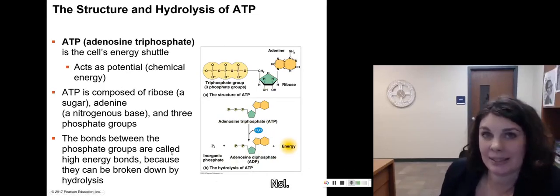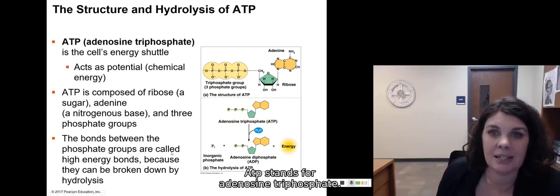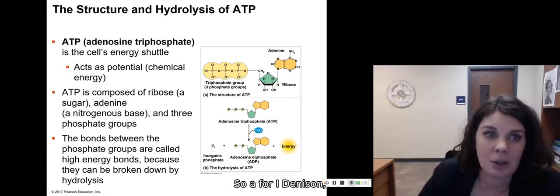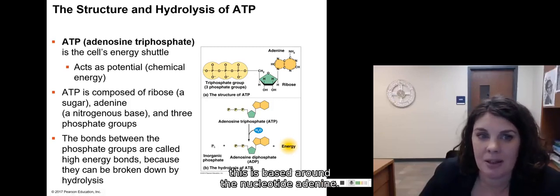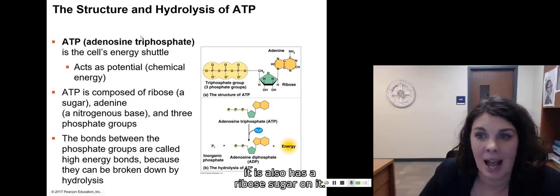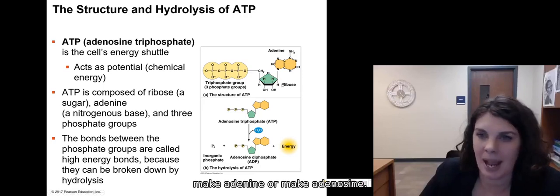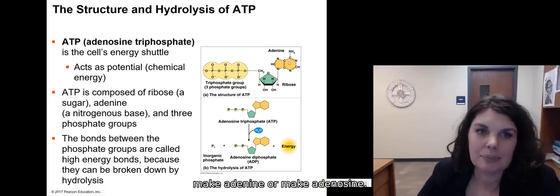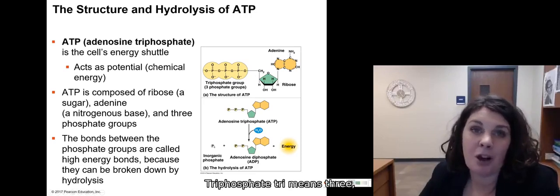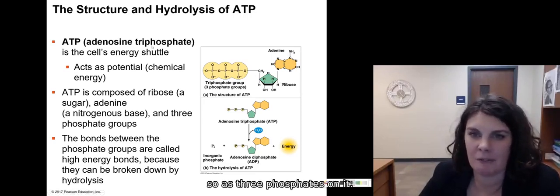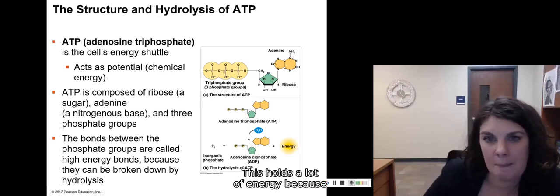ATP is the energy shuttle in a cell. ATP stands for adenosine triphosphate. So A for adenosine. This is based around the nucleotide adenine. It also has a ribose sugar on it. So adenine and ribose together make adenosine. And then triphosphate, tri means three, so it has three phosphates on it.